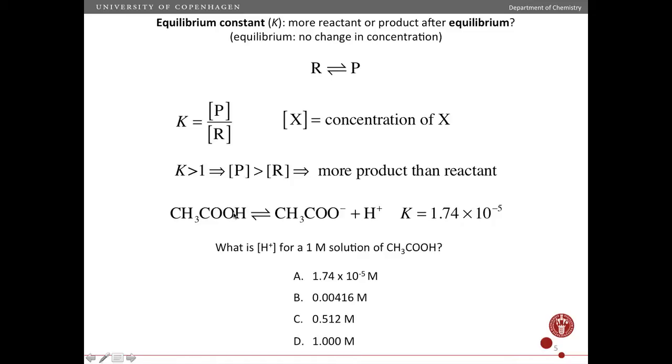Okay, so here we have a slightly more complicated equilibrium, where you have two products made from one reactant. So this proton comes off here to make acetate. And the equilibrium constant has been measured to be this value. So 1.74 times 10 to the minus fifth. Okay, that's the equilibrium constant. So if you start with a one molar solution of this, let it go to equilibrium. What is the concentration of one of the products? Not molecules, but ions in this case. So what is the concentration of protons for a one molar solution?